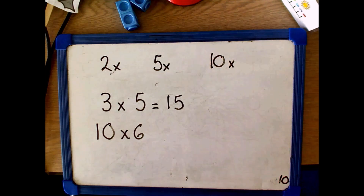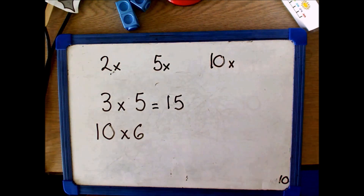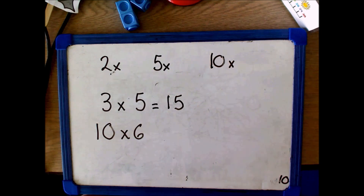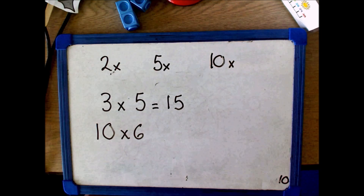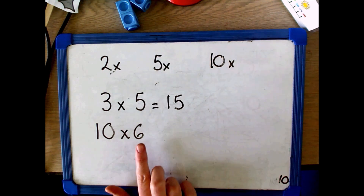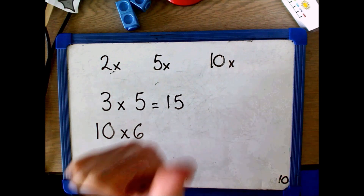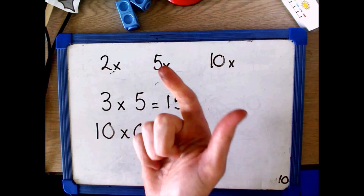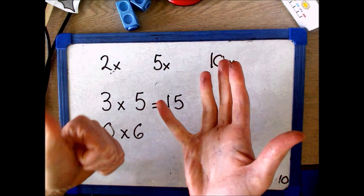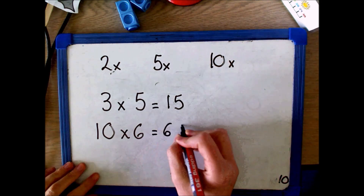For 10 times 6, children could use their understanding of commutative relationships — multiplication can be done in any order. As children haven't learnt their 6 times table yet this may be tricky, but they know that 10 times 6 is the same as 6 times 10. So they could just count in 10s: 10, 20, 30, 40, 50, 60. So 10 times 6 equals 60.